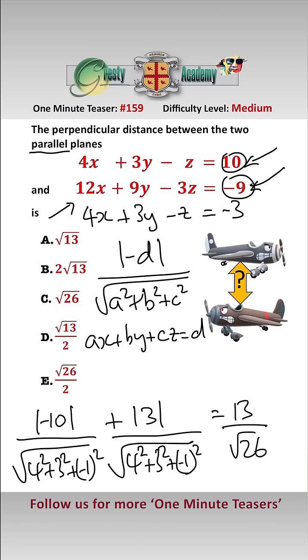This equals 13 over √26, which equals √26 over 2, which is answer E.